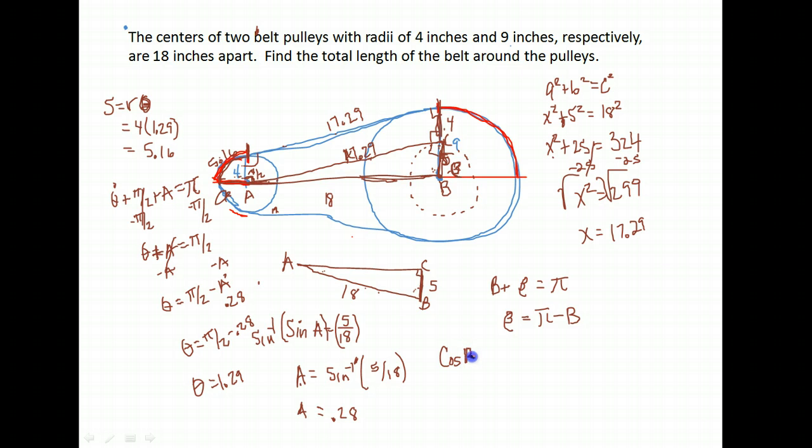For angle B, we have the adjacent and the hypotenuse, which is cosine. So cosine of angle B equals adjacent 5 over hypotenuse 18. To find our B, we would do the inverse or arc cosine here. Since we want radian measure answers, make sure your calculator is in radian mode.